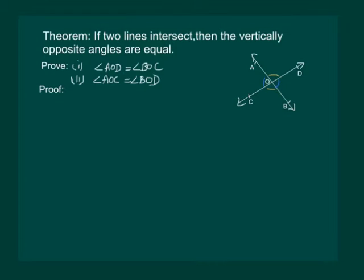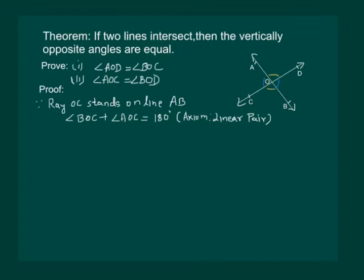To start with proof, let us consider line AB. Then OC is a ray on it. Then our axiom 1 says that if a ray stands on a line, then the sum of two adjacent angles will be equal to 180 degrees. That means we can say that angle BOC plus angle AOC should be equal to 180 degrees.